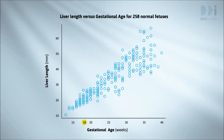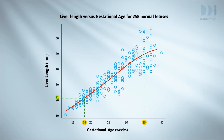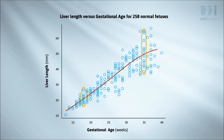We want to use the graph to predict the range of liver lengths we'd expect for a healthy fetus from its age. We'll do this for two gestational ages: 18 weeks and 35 weeks. At 18 weeks, putting on a trend curve suggests the liver length should be about 21 millimetres. At 35 weeks, it suggests about 49 millimetres. But when we look at the scatter, there is a reasonable amount of variation in liver lengths of healthy 18-week-olds, and a lot of variation in the liver lengths of normal 35-week-olds. We clearly need to take that into account.